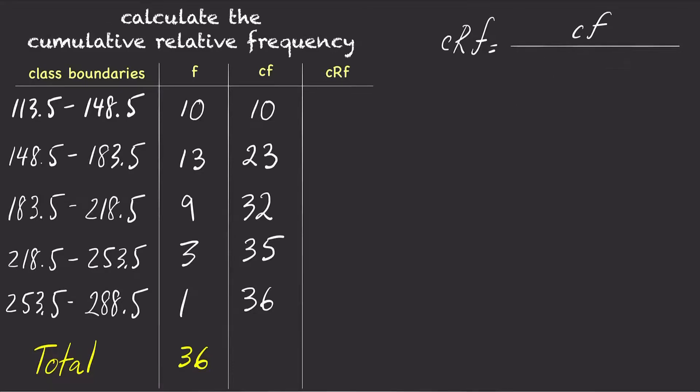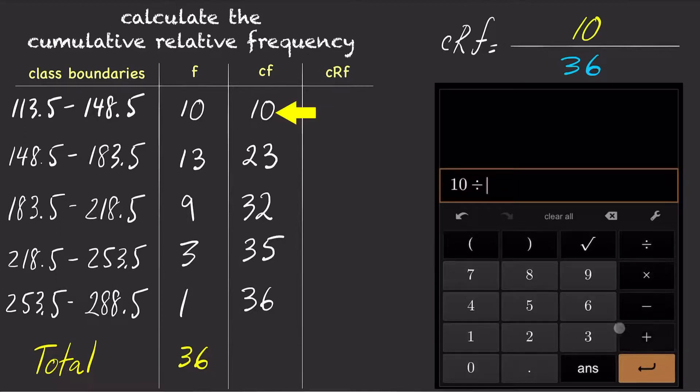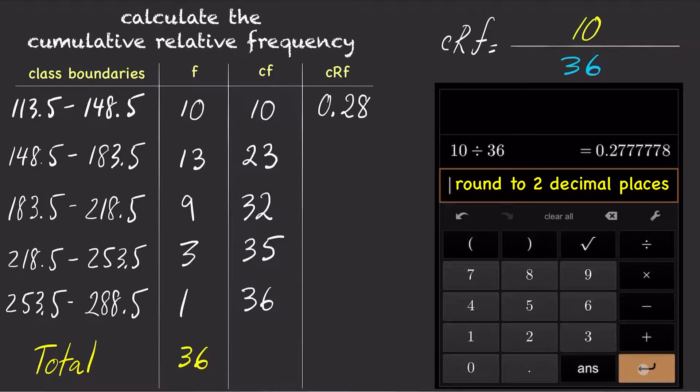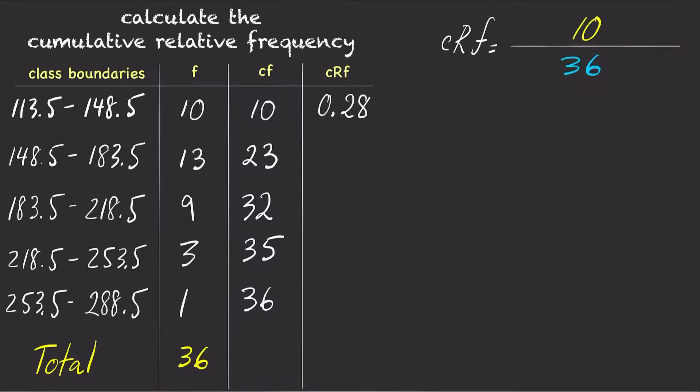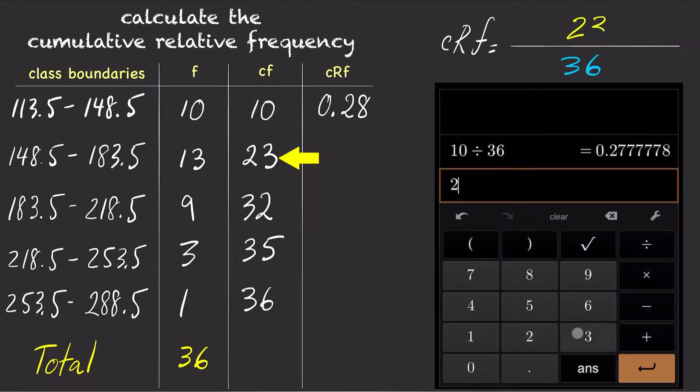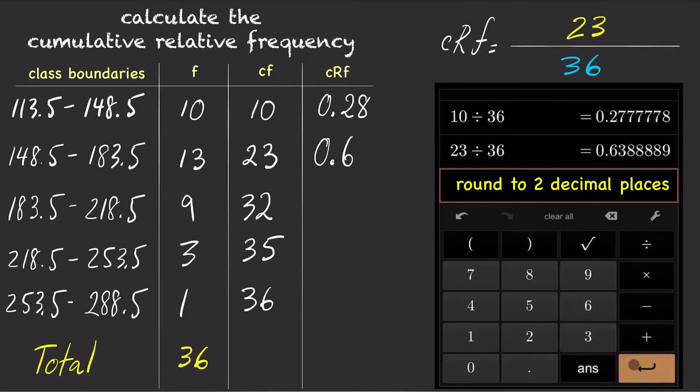So for the first class, the CRF is 10 divided by 36 equals 0.28. And for the second class, the CRF is 23 divided by 36 equals 0.64.